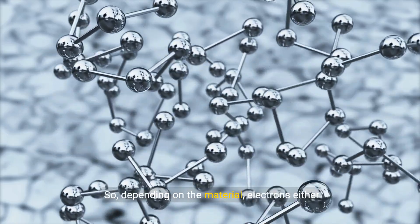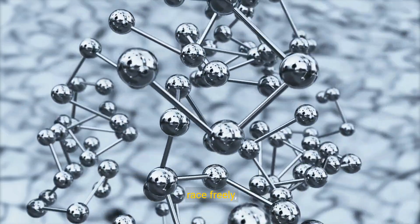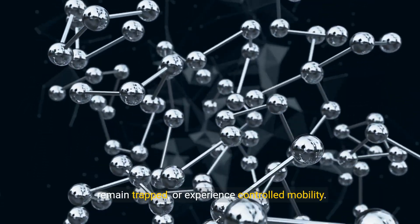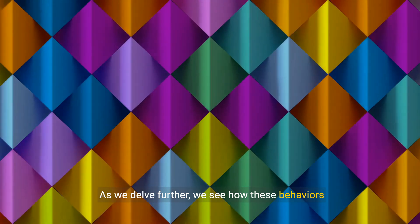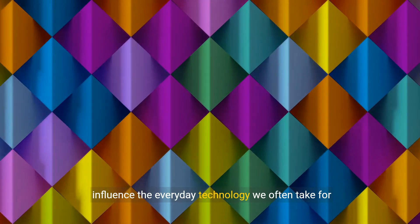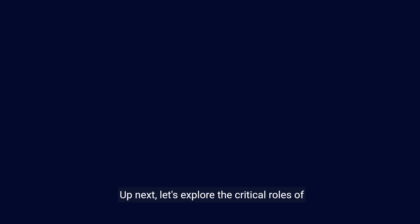So, depending on the material, electrons either race freely, remain trapped, or experience controlled mobility. As we delve further, we see how these behaviors influence the everyday technology we often take for granted.